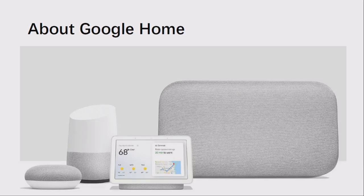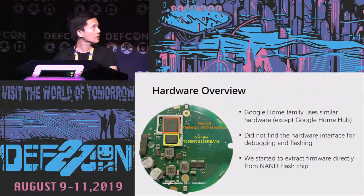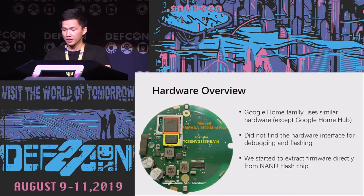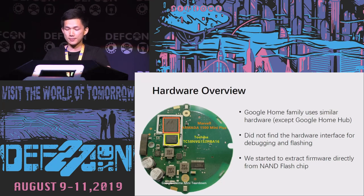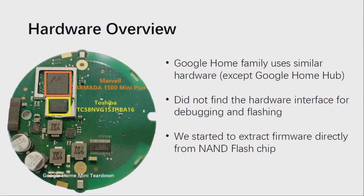The Google Home family includes four devices, all of which have similar hardware. We chose the best-selling Google Home Mini as the main test device. For hardware analysis, we found that the Google Home Mini uses a Marvell CPU and Toshiba flash chip, but we did not find any debugging or flashing interface, so we could only extract firmware directly from the flash chip.